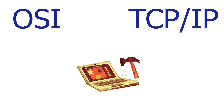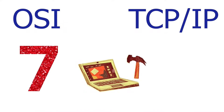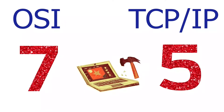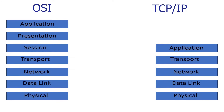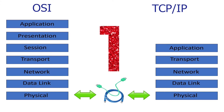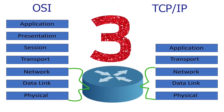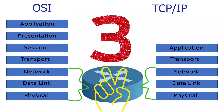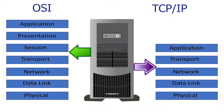Both models divide the communication process into layers. OSI divides it into seven layers; TCP/IP divides it into five layers. Each layer defines a specific part of the communication. A device can work in a single layer or multiple layers. For example, Ethernet cables work in layer 1, Ethernet switches work in both layers 1 and 2, routers work in layers 1, 2, and 3, and devices such as a PC and server work in all layers.